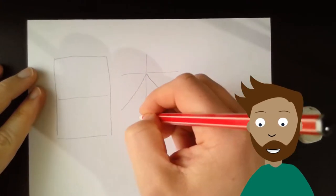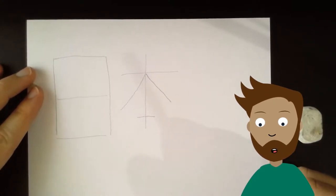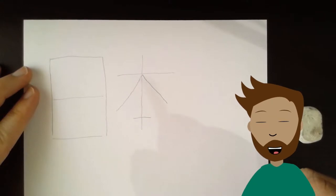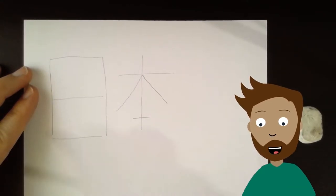The next character is Hon which we know as book but can also mean origin or beginning. Where does the sun rise? It begins to rise in the east and because Japan is east of a lot of countries, that's how the country got its name.